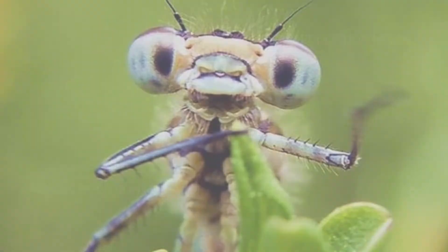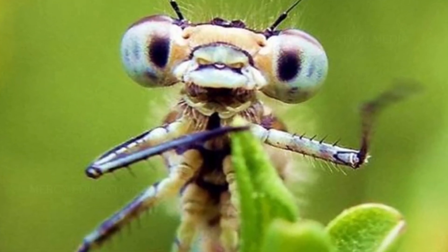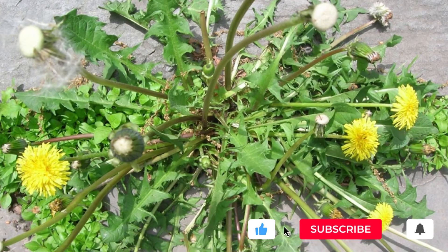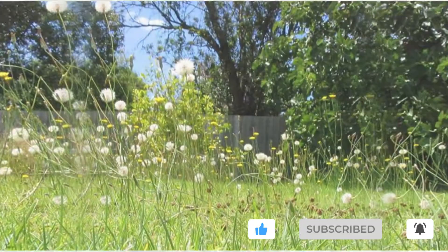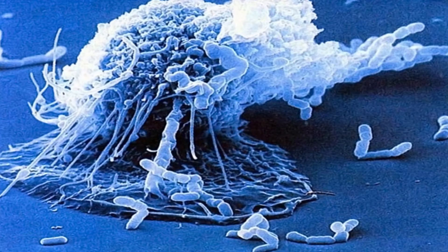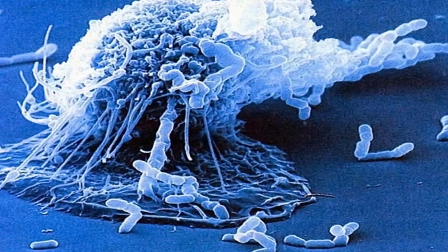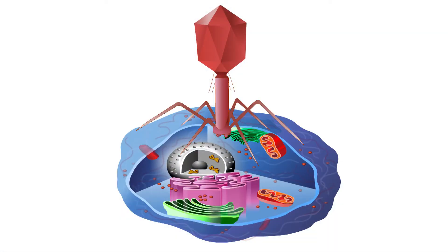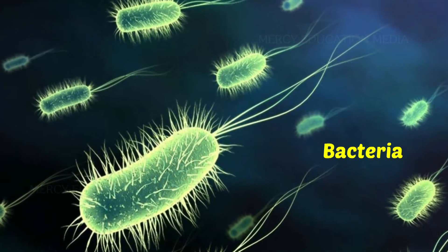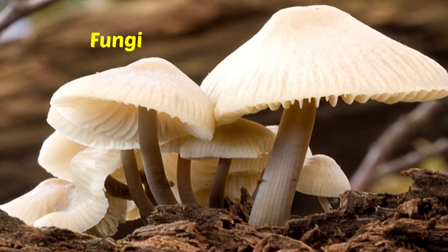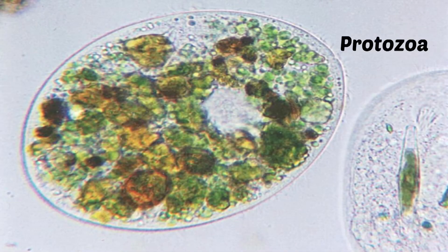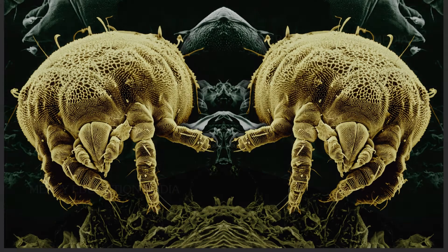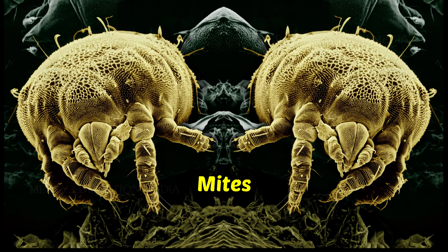Let us see about biopesticides. The biological agents that are used for control of insects, weeds and pathogens produced from living organisms are called biopesticides. Microorganisms such as viruses, bacteria, fungi, protozoa and mites may be used as biopesticides.